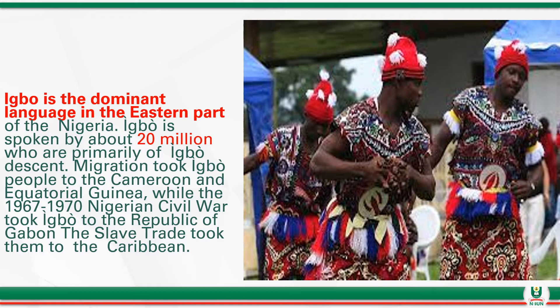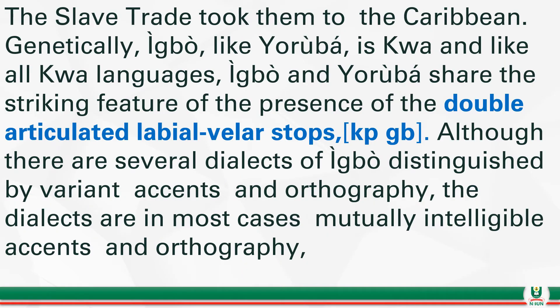Migration took Igbo people to Cameroon and Equatorial Guinea, while during the Civil War it also took them to Gabon. The slave trade also took them to the Caribbean. Genetically, Igbo, like Hausa, is a Kwa language. Unlike most Kwa languages, Igbo and Yoruba share the striking feature of the presence of double-articulated labio-velar stops. Although there are several dialects of Igbo distinguished by variant accents and orthography, the dialects are in most cases mutually intelligible.